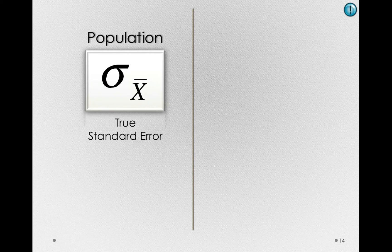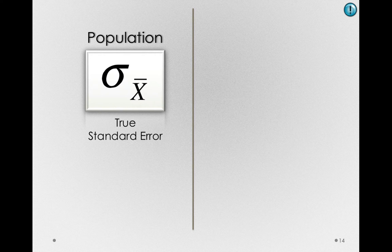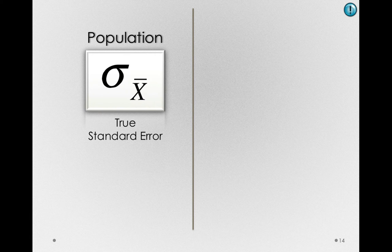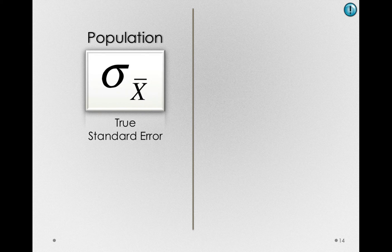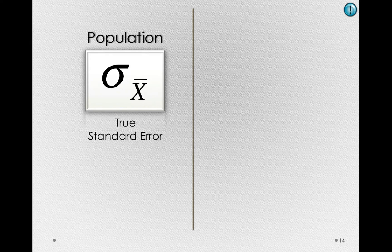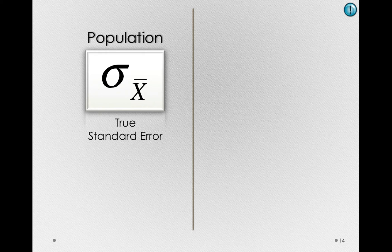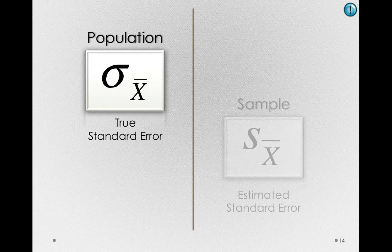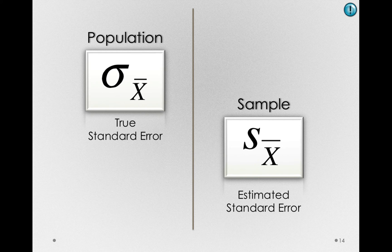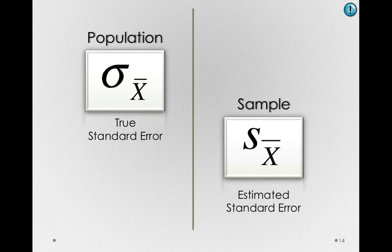Now, notice the true standard error is out there. There is some true standard deviation of the sampling distribution of sample means. But if we substitute our sample estimate for the population variance, we won't be calculating that value. Instead, we'll be calculating an estimated standard error, or an s sub x bar.